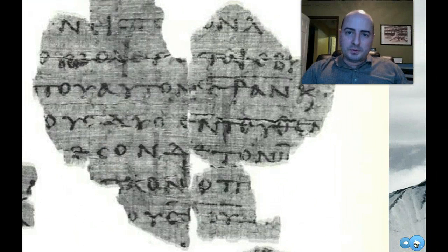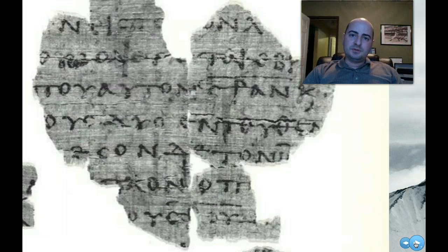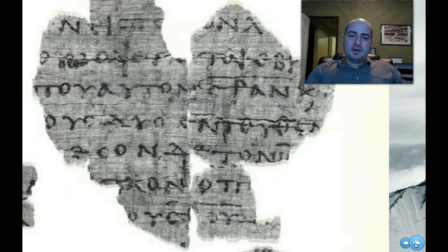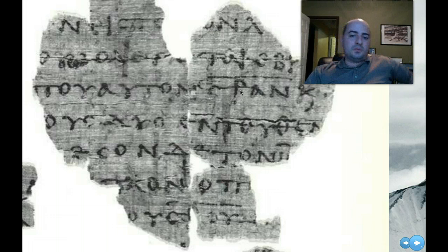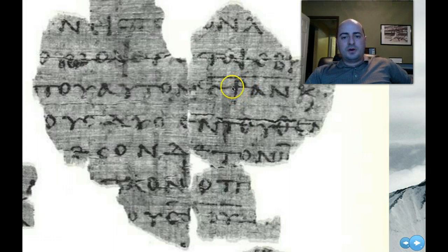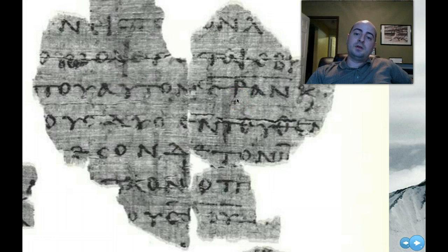Now, I want to show you something really cool about this particular fragment. We can do two birds with one stone, because there's something very special about this document, right here. You can see my mouse pointer. That's called a staurogram. And it's interesting because it's taking up several letters of a particular word, and that word is 'crucify.' And you can see it looks kind of like a cross, and that's because that's what it is. And it's what scribes did to show that they were taking up more than one letter.